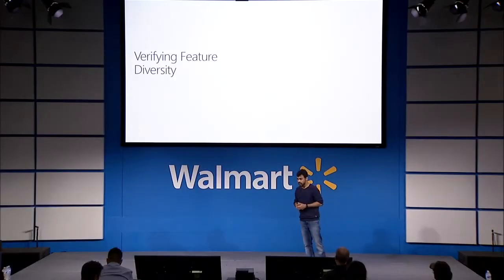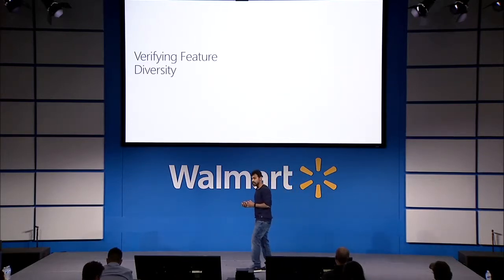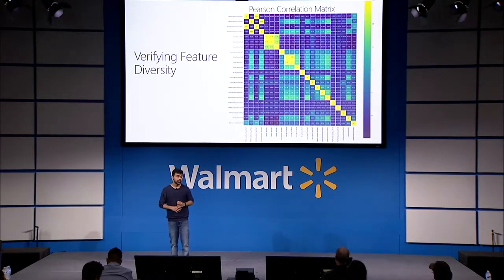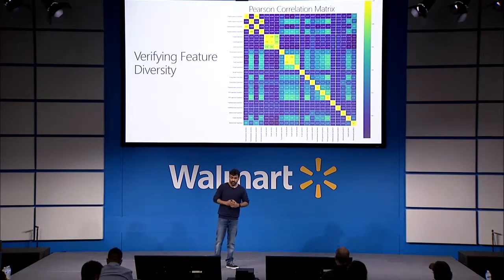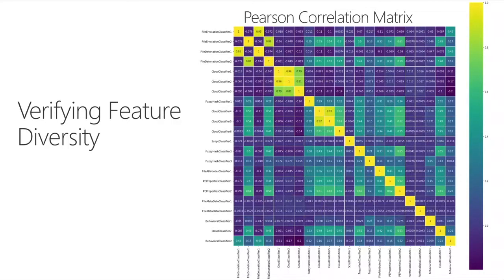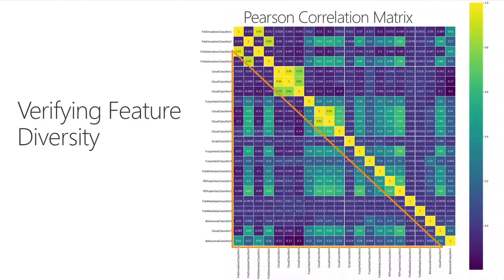A great way to check for diversity is the Pearson correlation matrix. It maps all your classifiers on X and Y axes. The center yellow line shows where the exact same classifier intersects — yellow is bad, meaning it's getting the same answers for the same dataset. For diversity, you want your features to be less correlated with each other, focusing on the dark blue areas, which means each classifier has something unique to contribute. These low-level signals can then be picked up by your stacked classifier for a better generalizable signal.